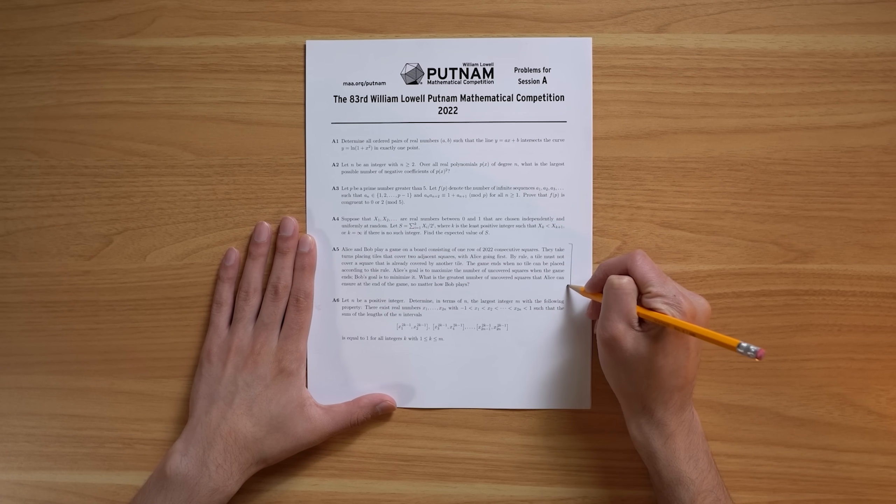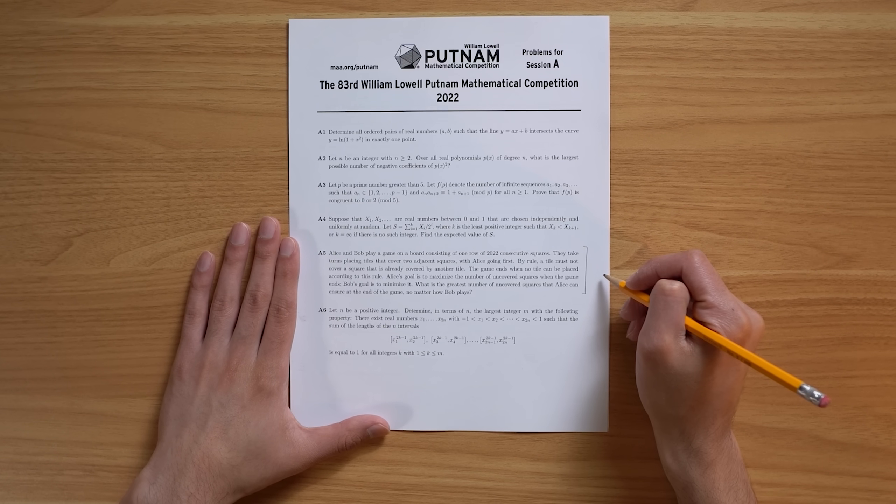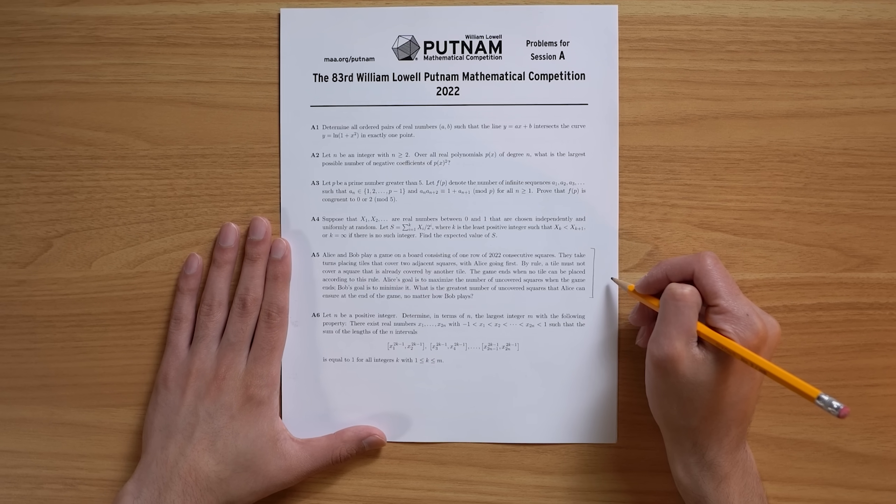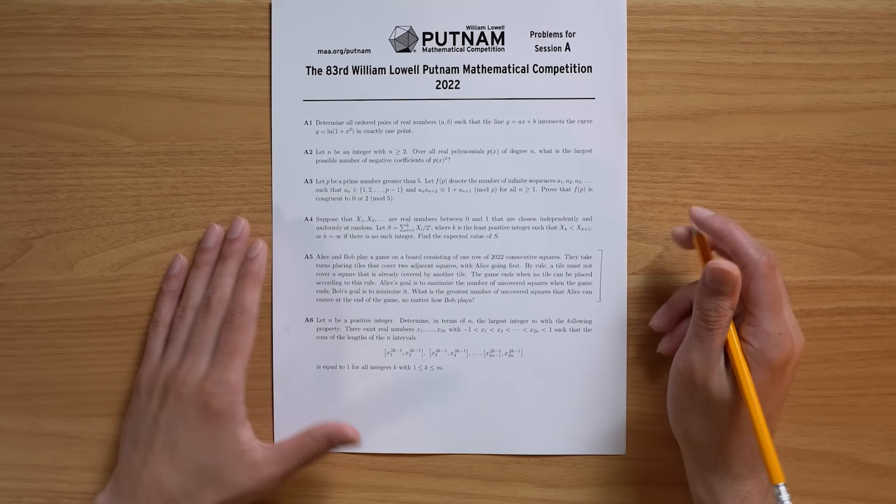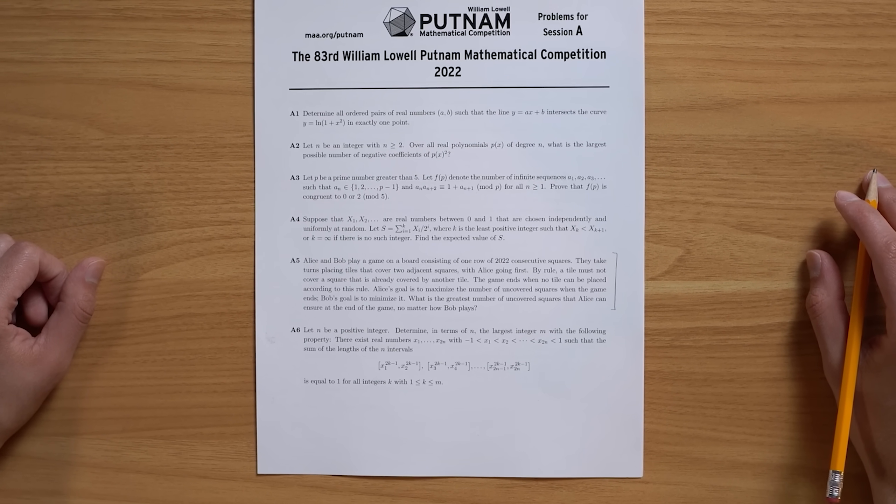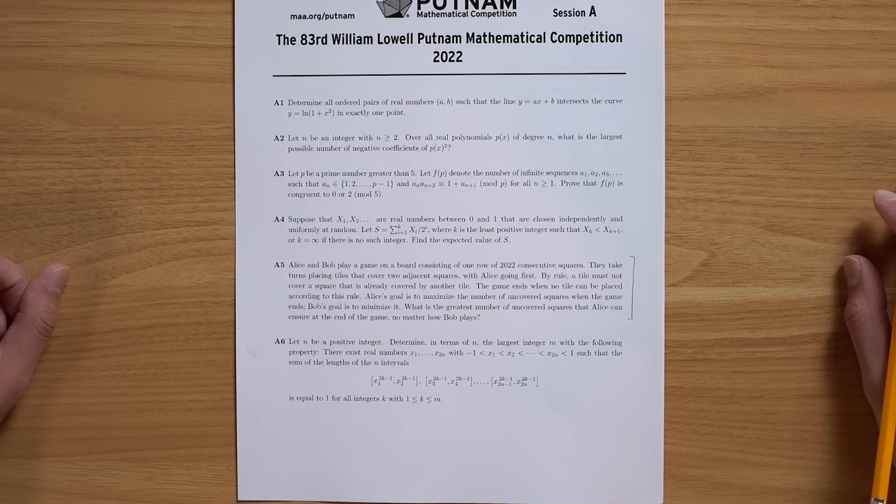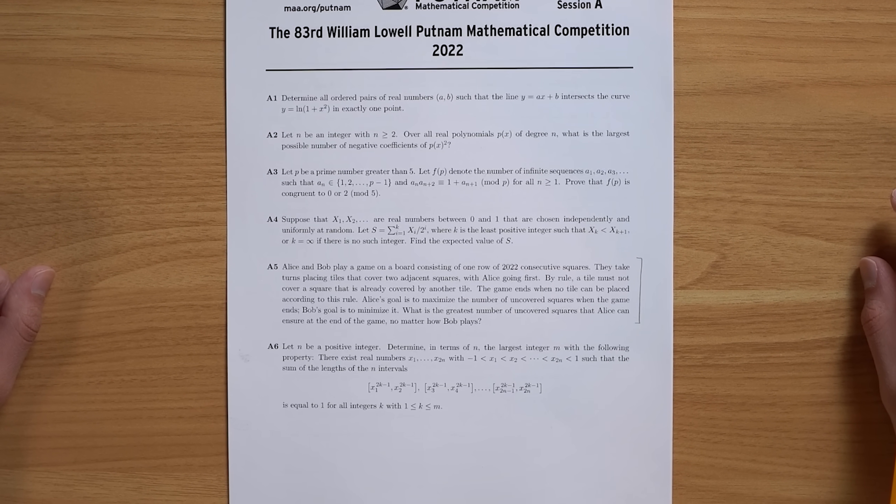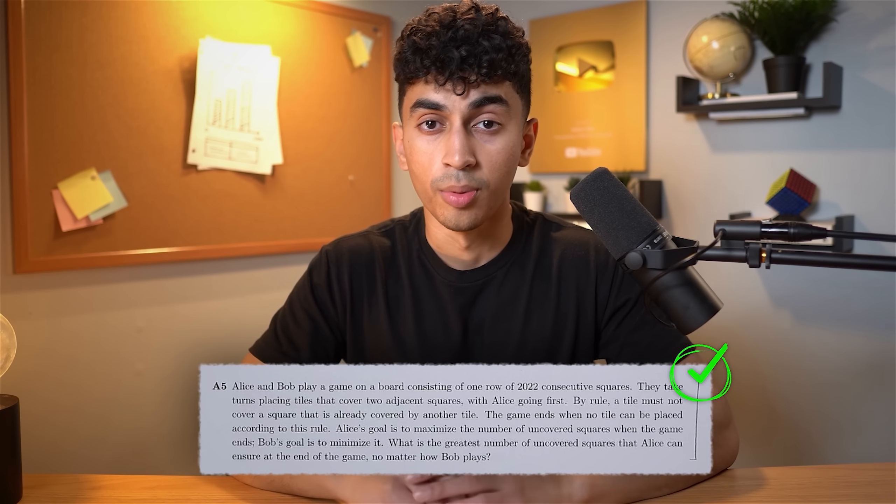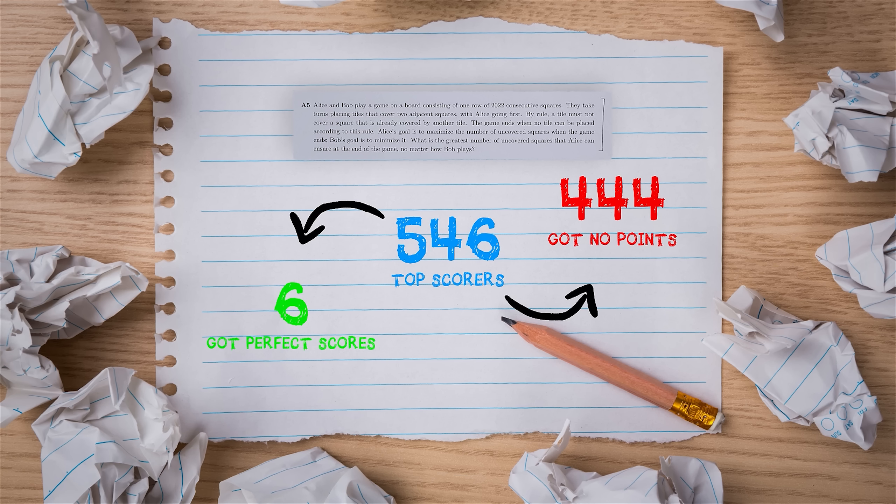Here's question A5 from the 83rd Putnam. Alice and Bob play a game on a board consisting of one row of 2022 consecutive squares. They take turns placing tiles that cover two adjacent squares, with Alice going first. By rule, a tile must not cover a square that is already covered by another tile. The game ends when no tile can be placed according to this rule. Alice's goal is to maximize the number of uncovered squares when the game ends. Bob's goal is to minimize it. What is the greatest number of uncovered squares that Alice can ensure at the end of the game, no matter how Bob plays? At very quick glance, this question might seem a little doable. When I looked at the results, and out of the 546 top scorers, only 6 got a perfect score on this question, and 444 of them received no points.